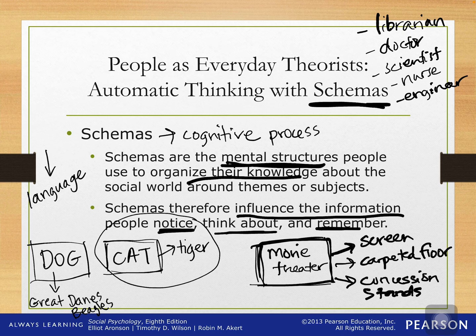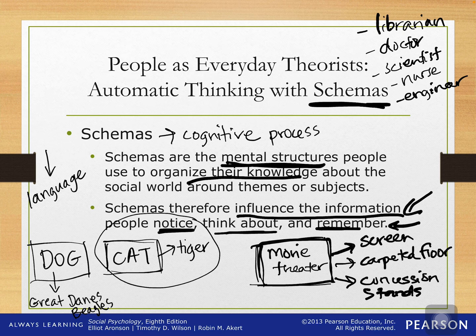We know that men can be nurses, women can be doctors, women can be engineers and mathematicians, and men can be librarians. But we develop these schemas because it's what we're used to seeing — it fits in the box. If you're used to seeing male nurses because your dad or brother is a nurse, that's going to change your schema. If your schema is usually that a woman is a nurse, the first time you really notice a man being a nurse, you're going to remember that information because it doesn't fit your schema, and that's going to modify your schema in the future. Next, we're going to talk about how we use automatic thinking with schemas and discuss stereotypes.